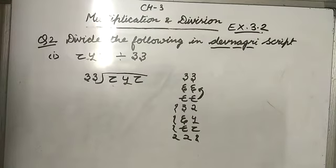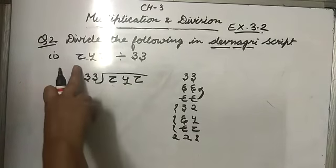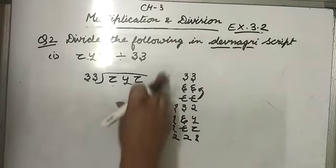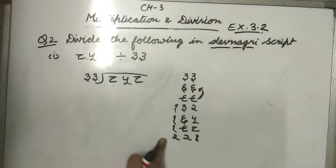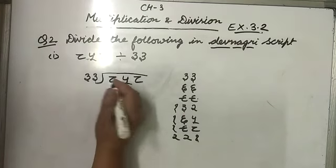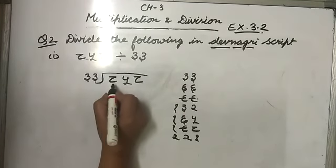Now kids, we will do question number 2 of this exercise which I have skipped earlier. I hope you are able to do division properly now. Divide the following in Devanagari script. You have to divide in Devanagari script. Our number is 858 divided by 33. Okay, I have already written the table of 33 here.